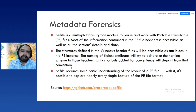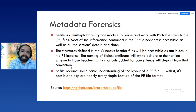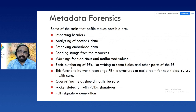The next file type is PE file — portable executable file — which is generally found on Windows operating systems. The PE file package works on any operating system including Windows or Linux, and you can extract information from portable executable files. It supports features such as inspecting headers, analyzing section data, retrieving embedded data, reading strings from resources, and warning about suspicious or malformed values.